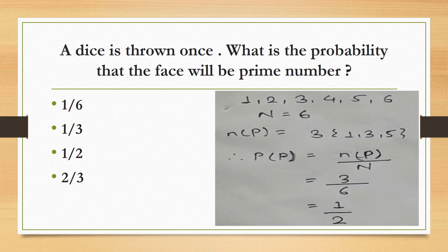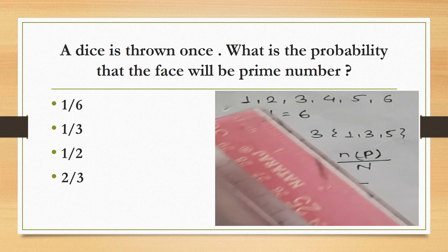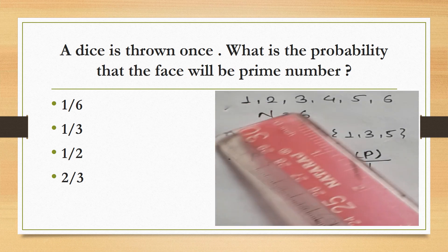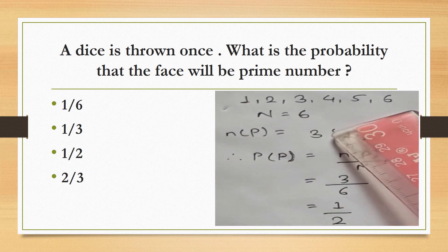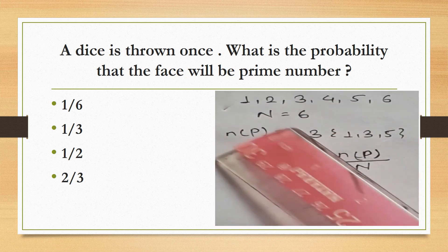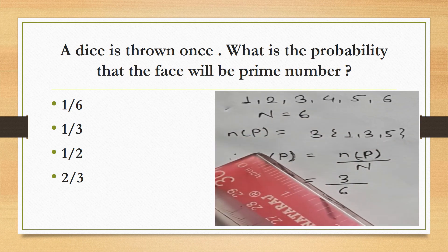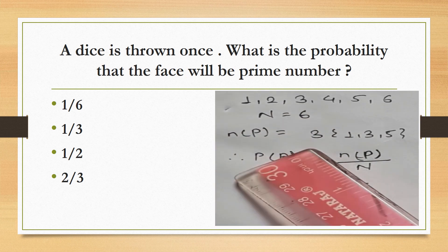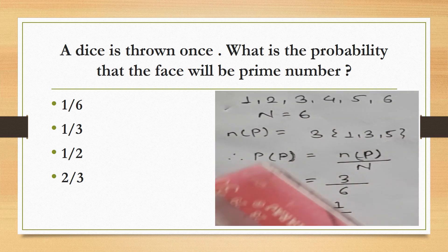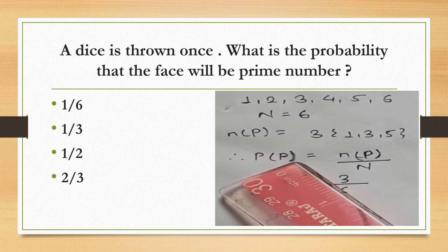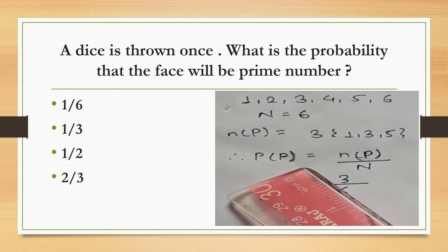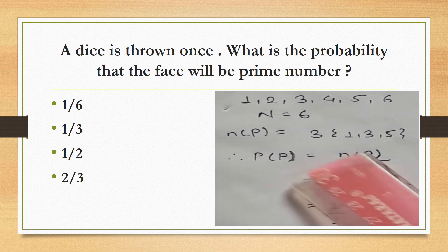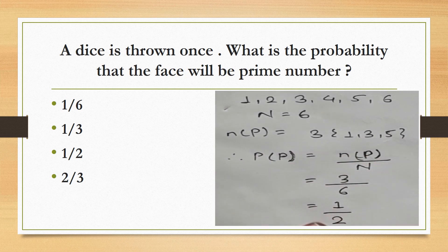A dice is thrown once. What is the probability that the face will show a prime number? The possible outcomes on a dice are 1, 2, 3, 4, 5, 6, so the total number of outcomes is 6. The prime numbers among these are 2, 3, and 5, giving 3 favorable outcomes. Therefore, the probability of getting a prime number is 3 by 6, which equals 1 by 2.